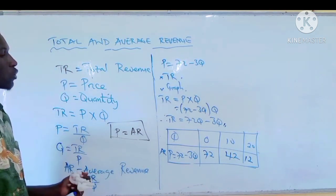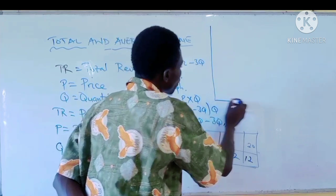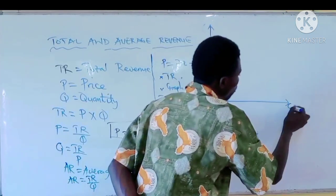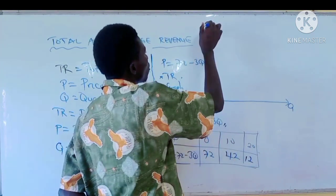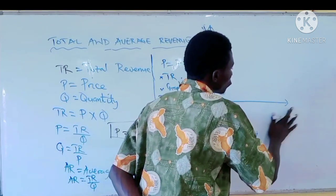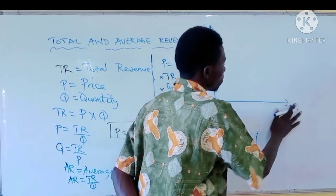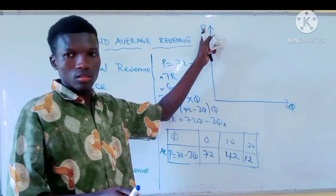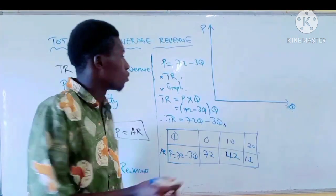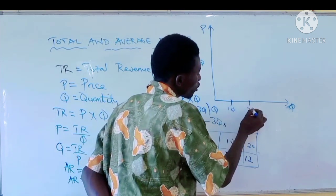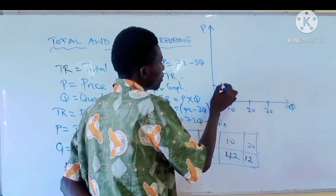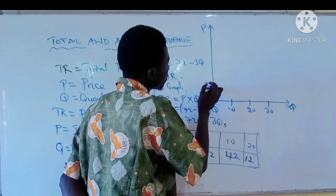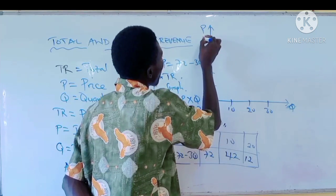To sketch the graph, draw the axes. Put price on the Y-axis and Q on the X-axis. On the X-axis, estimate values like 10, 20, 30 onwards. On the Y-axis, you can use 20, 40, 60, 80 onwards.